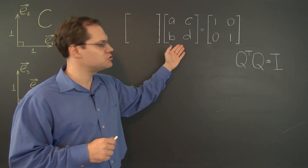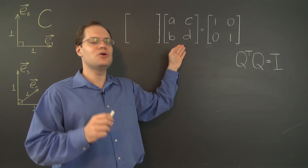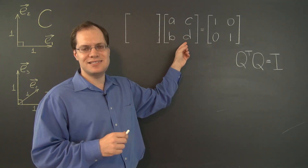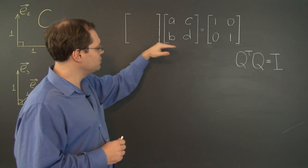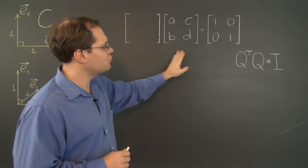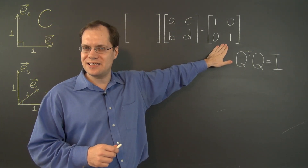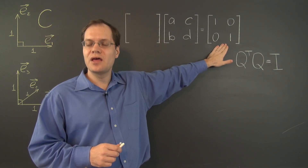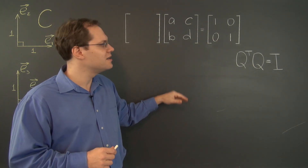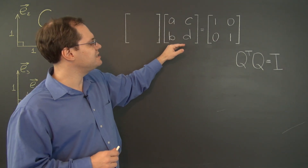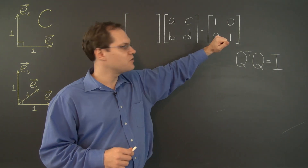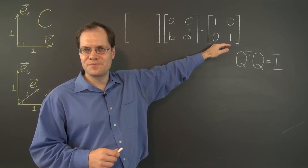We'll have a matrix Q with unknown entries A, B, C, and D. This will be Q, this will be Q transpose, and of course their product equals the identity matrix. What we're going to do now is determine the relationships that A, B, C, and D must satisfy in order for this identity to hold.